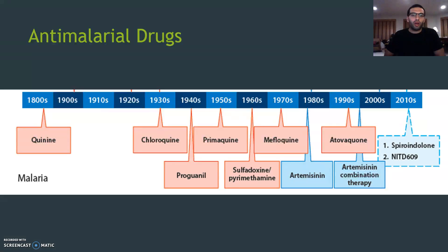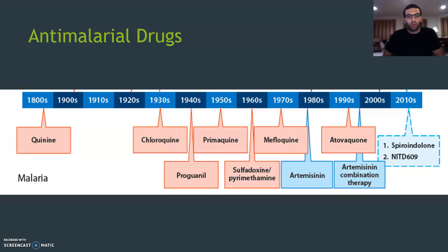Here's a timeline of anti-malarial drugs that have been used over the years. Some have been used as early as the 1800s, but primarily the ones used have been developed since the 1930s. It's important to note that some of these older drugs are less effective nowadays due to drug resistance, so primarily the newer ones are used to treat malaria.